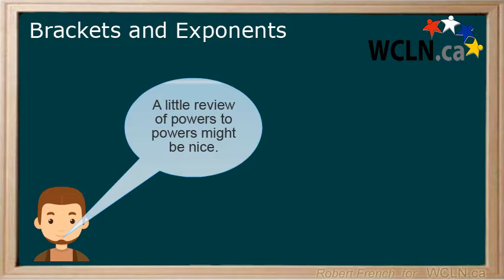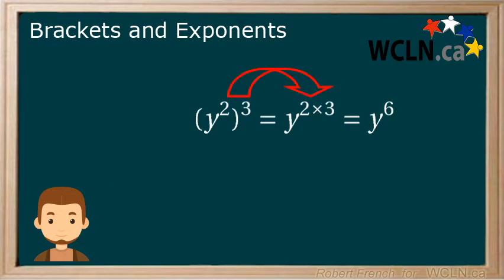Let's quickly review what happens when you have a term containing exponents in brackets raised to an exponent. You multiply the exponent outside the brackets to every number and variable within the brackets. If you don't remember why or want more information, I suggest you review powers of powers.